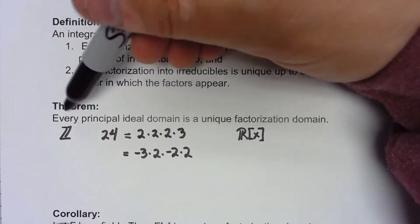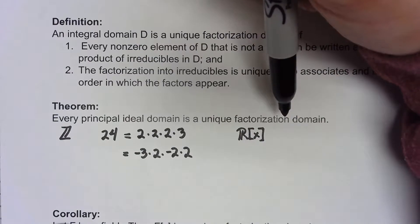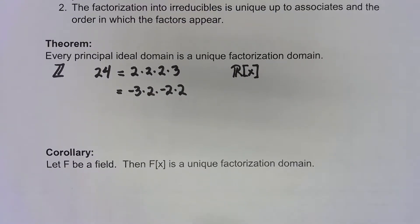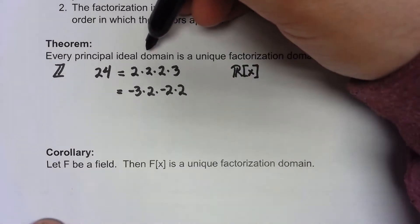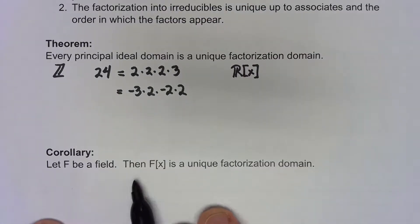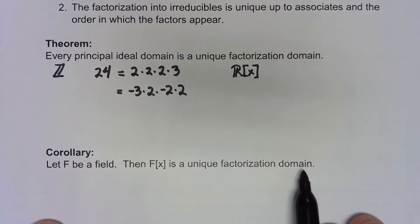Now working from this theorem every principal ideal domain is a unique factorization domain. Well one of the things we said was that if we started with a field and then created a polynomial ring, that was a principal ideal domain. So when we have a field F, the polynomial ring created from that field has to be a unique factorization domain.